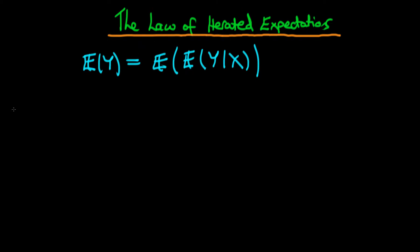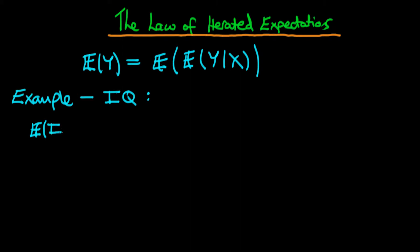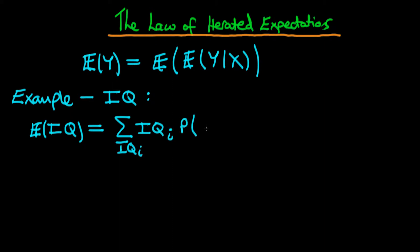What does it actually mean? To explain this, I'm going to use an example. The example is we're looking at the level of IQ within a population. Specifically, we might be interested in the average level of IQ within that population — in other words, the expected value of IQ. We could work out this average by summing over all the possible values which IQ can take, taking a weighted sum of those IQ levels times the probability that IQ takes on that particular value.